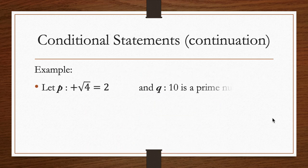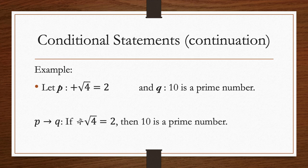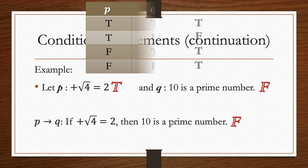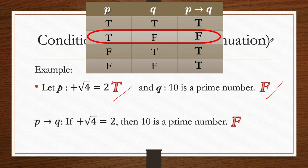As an example, let P be 'the positive square root of 4 equals 2' and Q be '10 is a prime number.' The conditional reads: 'If the positive square root of 4 is 2, then 10 is a prime number.' P is true — the positive square root of 4 is indeed 2. Q is false — 10 is not prime. So the conditional is false, following row 2, since a true hypothesis leads to a false conclusion.